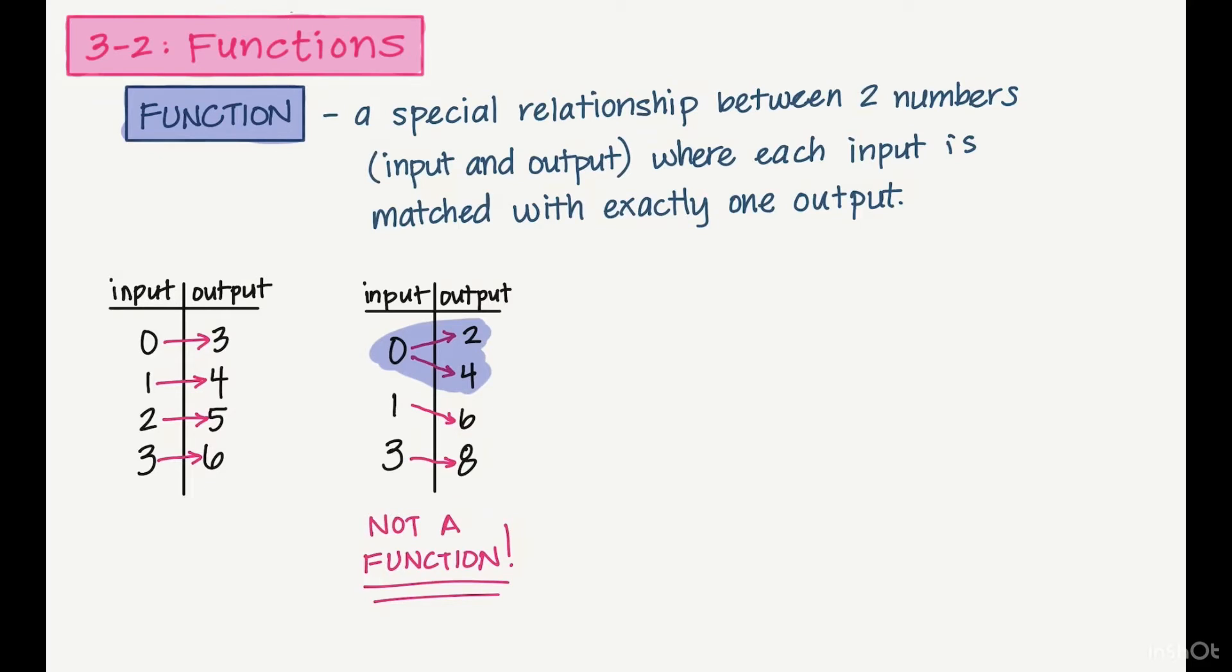A couple other terms I wanted to go over: other terms you might see in your textbooks referring to input. The variable x is also talking about the input. It might also be called the domain, and then the final term is the independent variable. All of these are talking about the exact same thing, that left-hand column. The output has other names: instead of x, it's called the y variable, or the range, or the dependent variable, because the value depends on what you put in at the beginning.